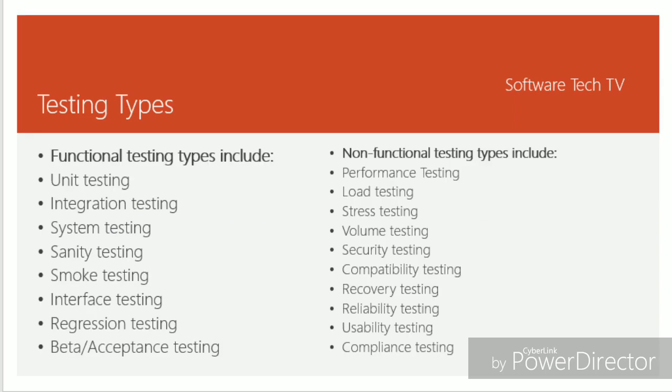Coming to testing types, it includes two types: functional testing and non-functional testing. In functional testing there are unit testing, integration testing, system testing, sanity testing, smoke testing, regression testing, and beta or acceptance testing. In non-functional testing there is performance testing, load testing, stress testing, and so on.